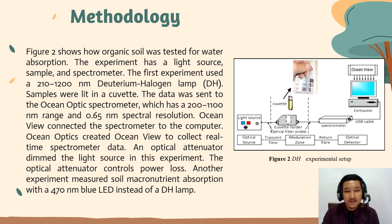An optional optical attenuator dimmed the light source. The optical attenuator countered power loss. Another experiment measured absorbance with a 470 nm blue LED instead of the halogen lamp.